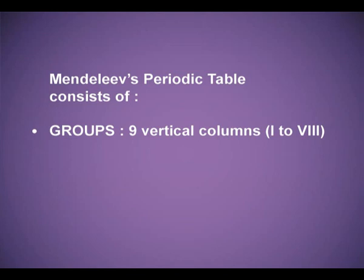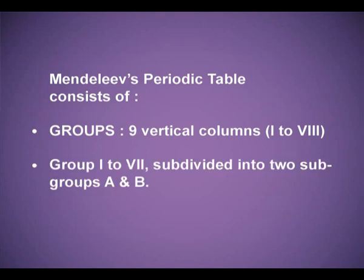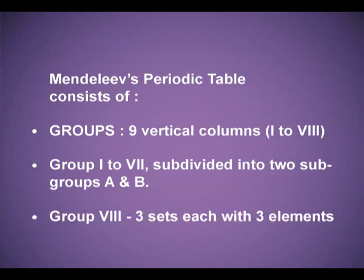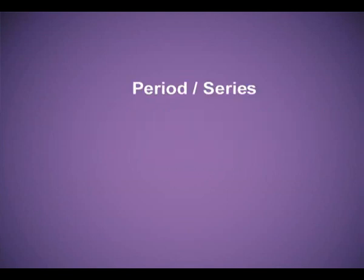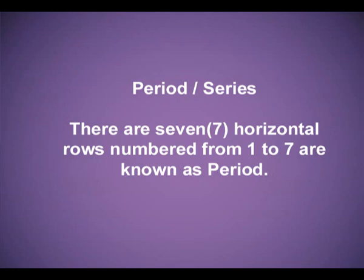Mendeleev's Periodic Table consists of groups — nine vertical columns from one to eight. Group 1 to 7 was subdivided into two subgroups A and B. Group 8 was divided into three sets, each with three elements. Group zero, which consists of inert gases, was not discovered at the time of Mendeleev. The horizontal rows are known as periods or series, and there were seven, numbered from one to seven.